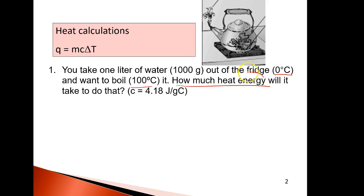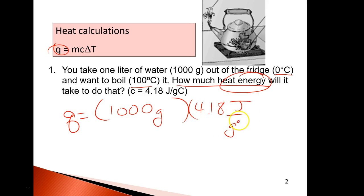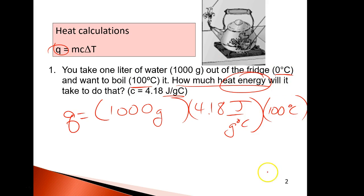How much heat energy? That means we're solving for Q. So Q equals the mass — 1,000 grams — times the specific heat, 4.18 joules over grams degrees C. And then delta T is the change in temperature. It went from 0 to 100, so it changed by 100 degrees C.